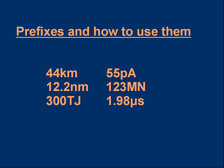Now the other examples you may not recognise, but let's just read through them anyway. 55 picoamps - pico is a prefix. 12.2 nanometres - nano is a prefix. 123 meganewtons - mega is a prefix. 300 terajoules - tera is a prefix. 1.98 microseconds - the prefix is micro, and we'll talk about all of these as we go through.